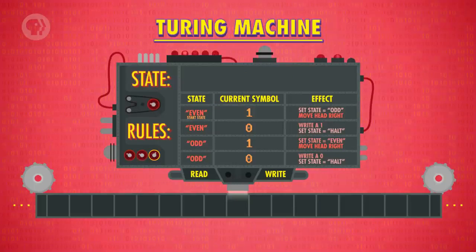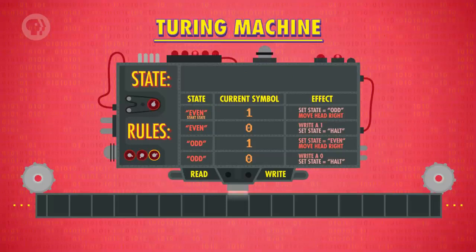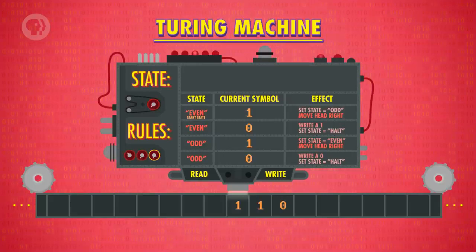Now that we've defined the rules and the starting state of our Turing machine, which is comparable to a computer program, we can run it on some example input. Let's say we store 110 onto tape. That's two ones, which means there is an even number of ones.